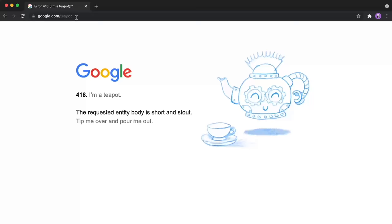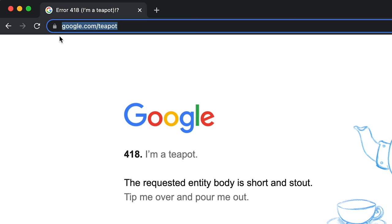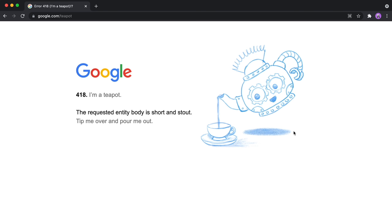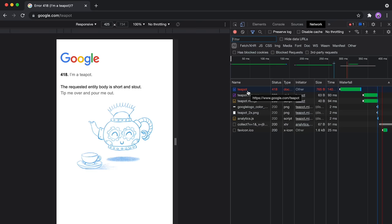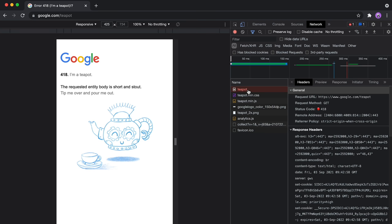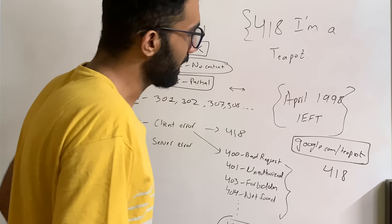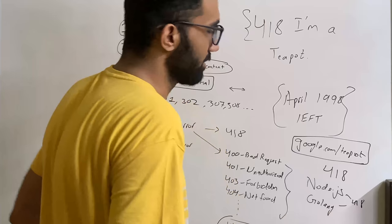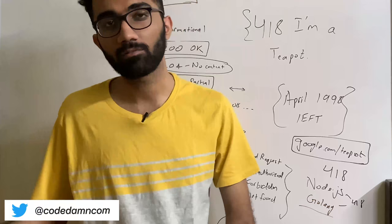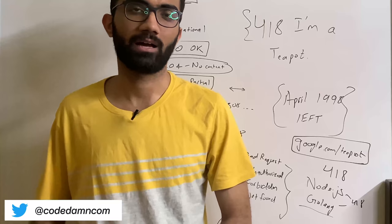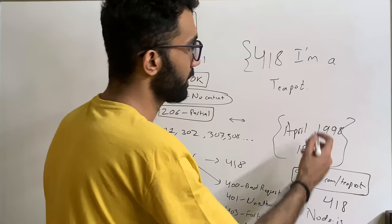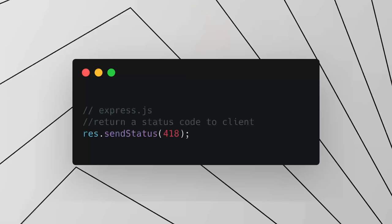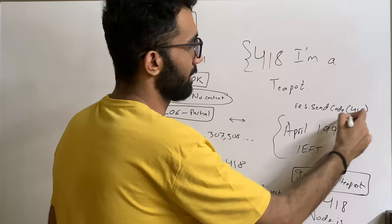If you want to see it yourself, go to google.com/teapot — Google has a dedicated page that returns status code 418. If you right-click, inspect element, and look in the network tab, you'll see the status code returned is actually 418. A lot of frameworks and runtimes like Node.js and Golang actually allow you to return 418 as a standard status code. Node.js, Golang, and a few more implement this as a standard HTTP return code. In Express, you can do res.status(418) to set the code.